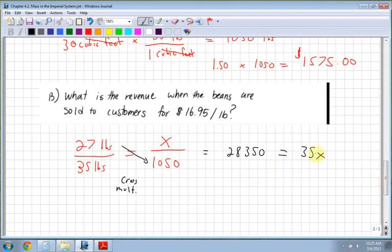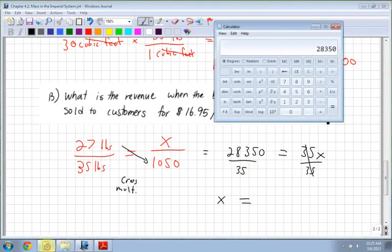So now what I do is I have to solve for x, so I divide by my 35 on both sides. And I say that x is equal to, so I divide that by 35, and I have x is equal to 810.